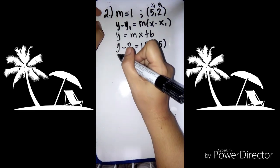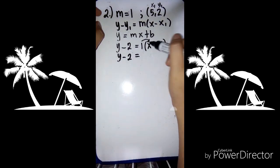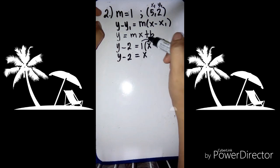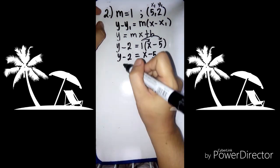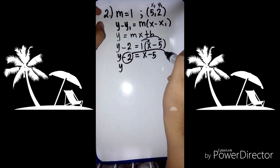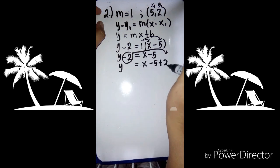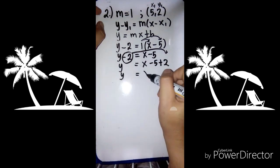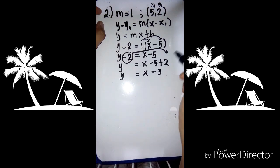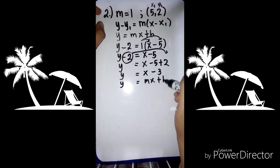So y minus 2, we distribute the 1: 1 times x is x, and 1 times negative 5 is negative 5. Then we solve for y by transposing negative 2 to the other side — negative becomes positive. So y equals x minus 5 plus 2, which gives y equals x minus 3. Now it is in the form of mx plus b.